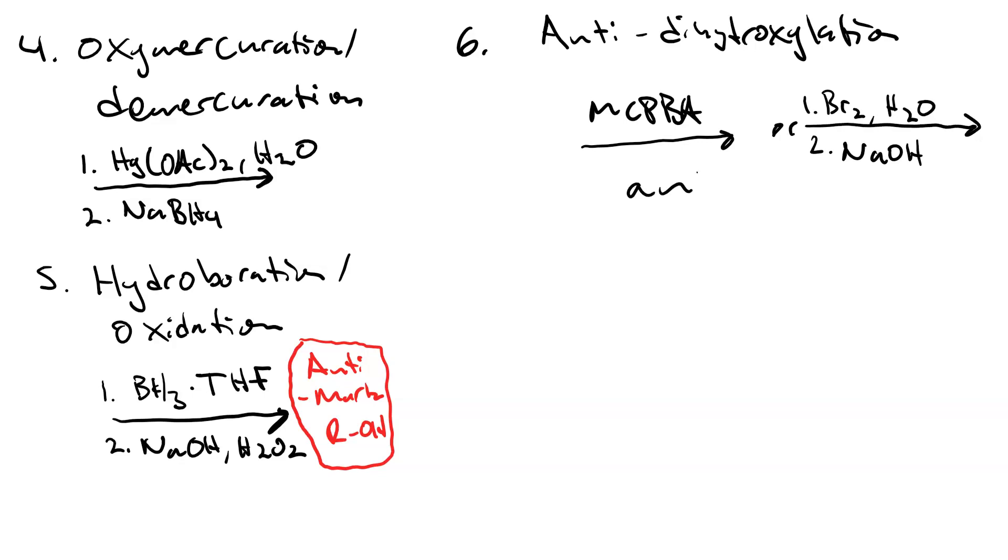The result is anti-addition and a diol. You can do syn-dihydroxylation via osmium tetraoxide catalytic amount and NMO or t-butyl hydroperoxide to regenerate it so that you don't use a whole bunch.